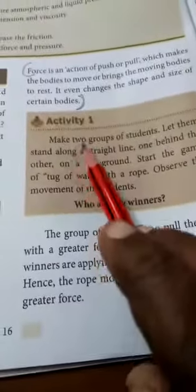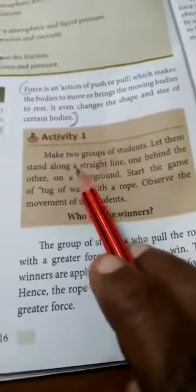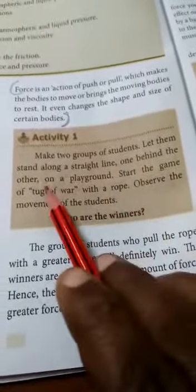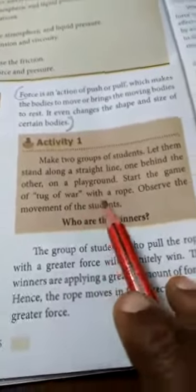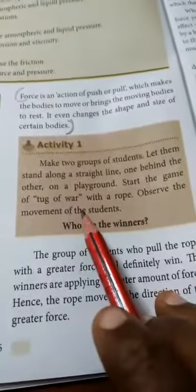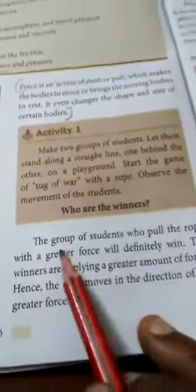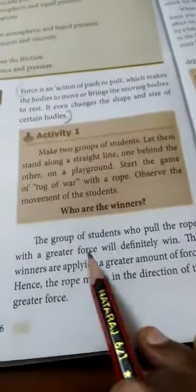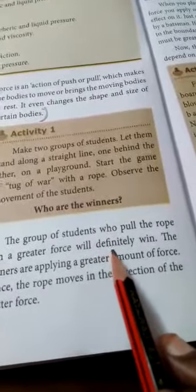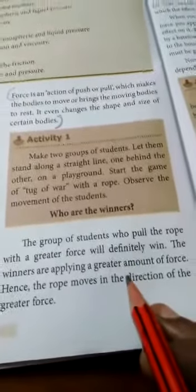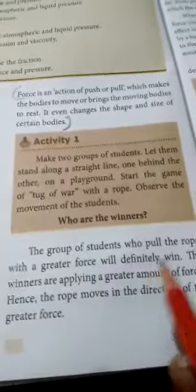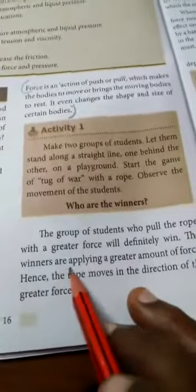Activity: Make two groups of students and let them stand along a straight line, one behind the other on the playground. Start a game of tug of war with a rope. Observe the movement of the students. The group of students who pull the rope with a greater force will definitely win.